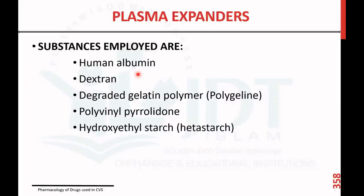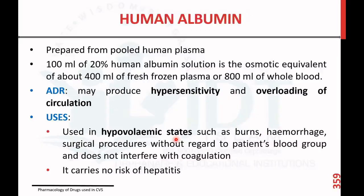Some examples of substances used as plasma expanders are: human albumin, dextran, degraded gelatin polymer or polygeline, polyvinyl pyrrolidone, and hydroxyethyl starch or hetastarch. Let's start with human albumin.